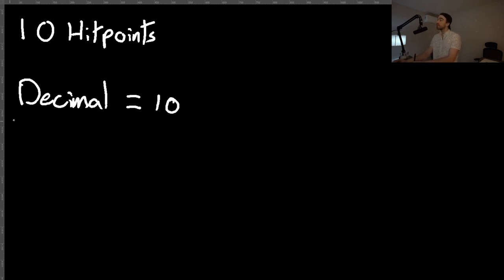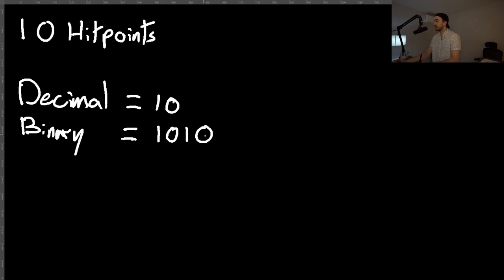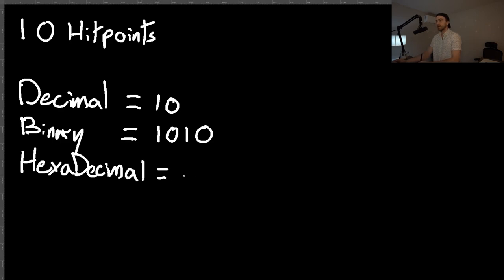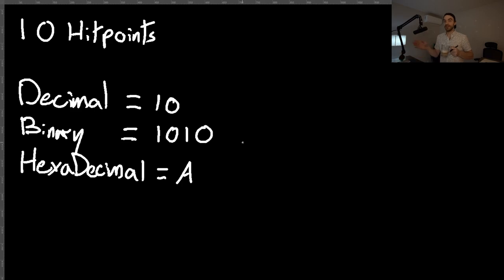In binary format, how does 10 look? Well, 10 in binary actually looks like 1010 — which looks odd for the moment, but we'll get to that in just a bit. And finally, in hexadecimal, it is represented as 'A'. Towards the end of the video we're going to learn how all of these numbers are actually the same value — 10 units.